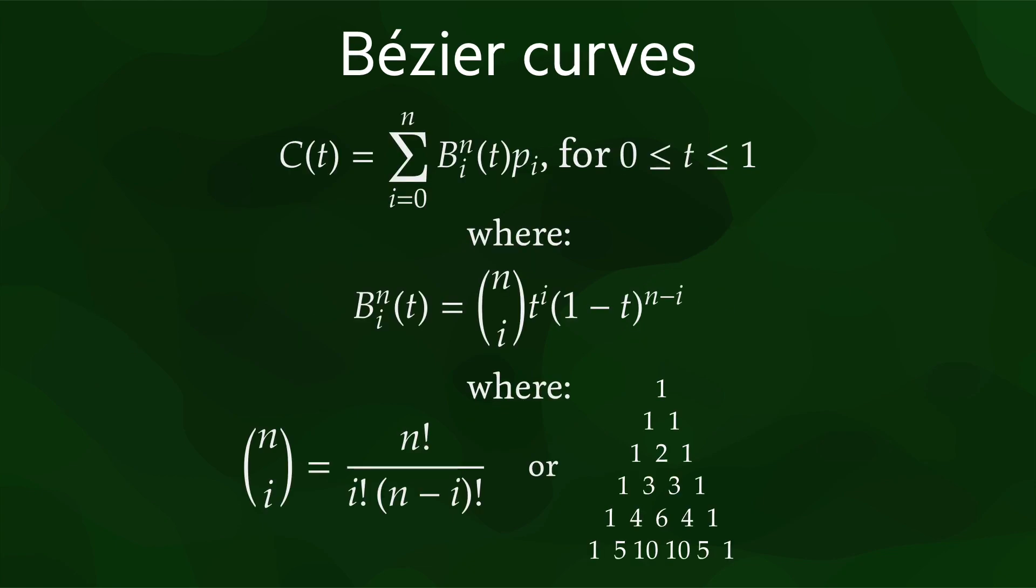Now, let's explain how Bézier curves are actually calculated. If we look at the top equation, we see that the Bézier curve C is a parametric curve, with a parameter t that goes from 0 to 1. The equation shows how the curve is a sort of weighted average of its n plus 1 points, where b_i is the weight at t, and p_i is the i-th point.